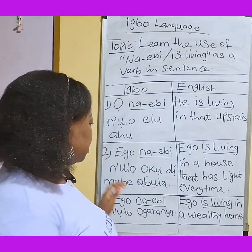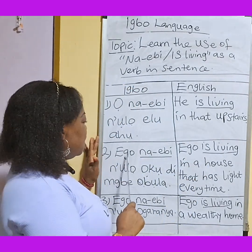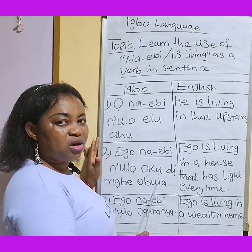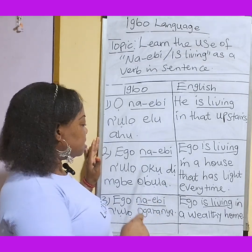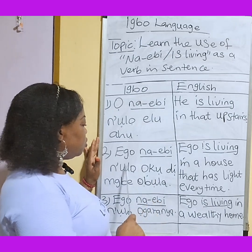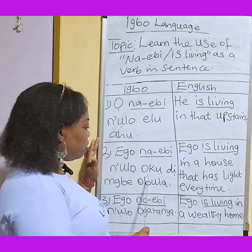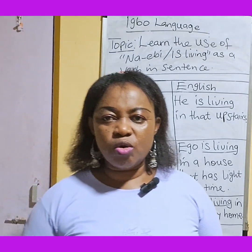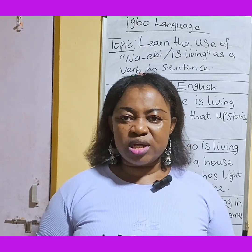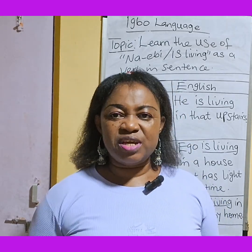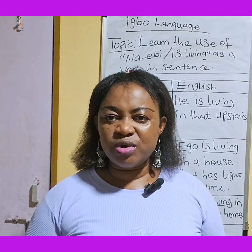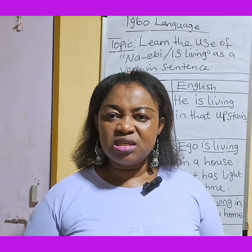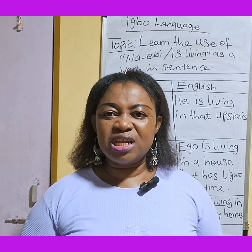Sentence number two — Nebi is our verb. A verb is a telling word, or a doing word, in a sentence. Verb is an action word.